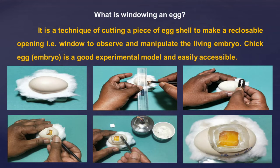Today, we shall learn the technique of windowing on hen egg for developmental studies. First, we shall see what is windowing an egg. It is a technique of cutting a piece of eggshell to make a re-closable opening, i.e. a window, to observe and manipulate the living embryo.